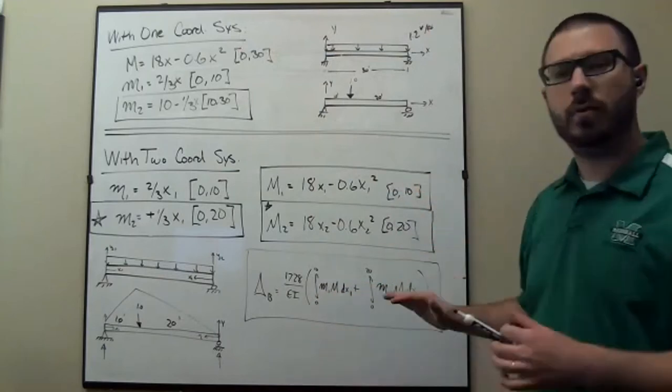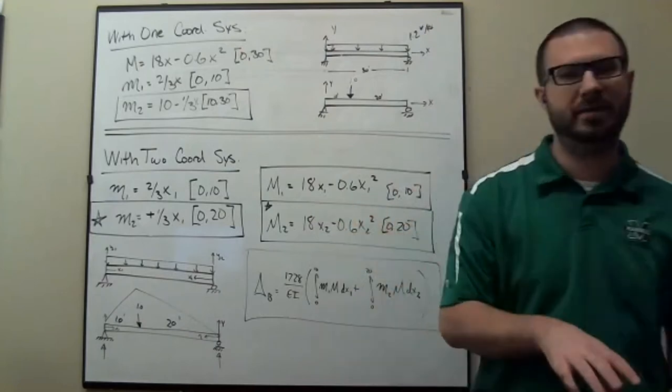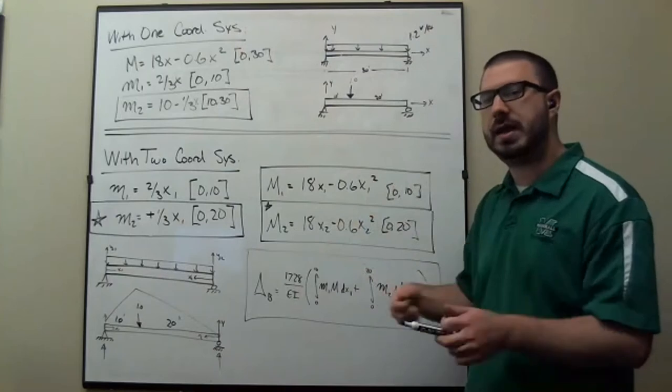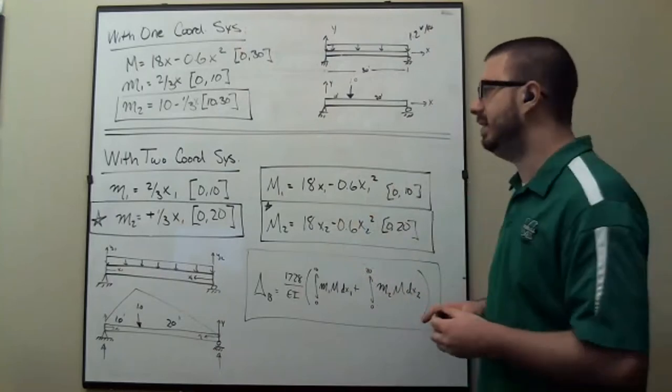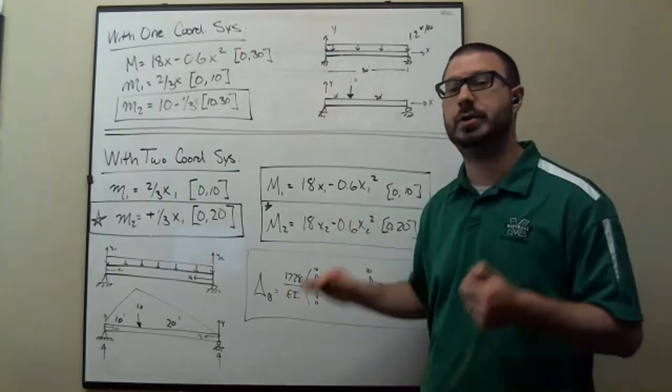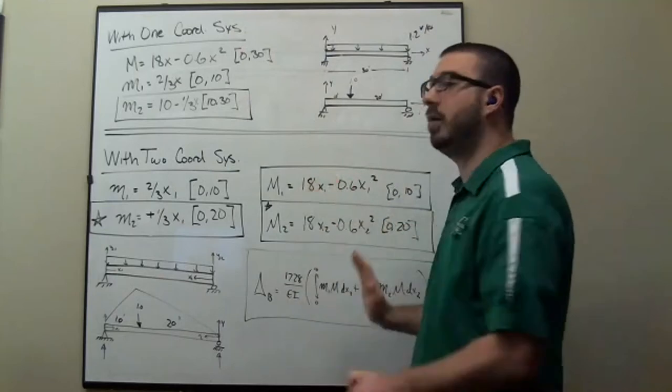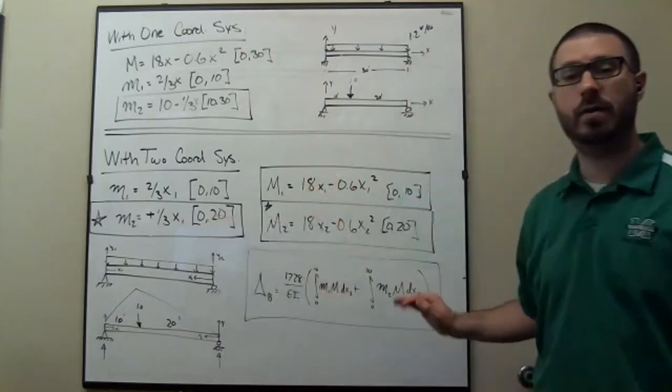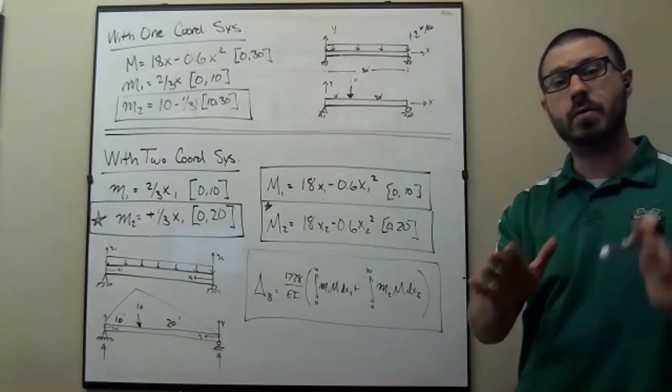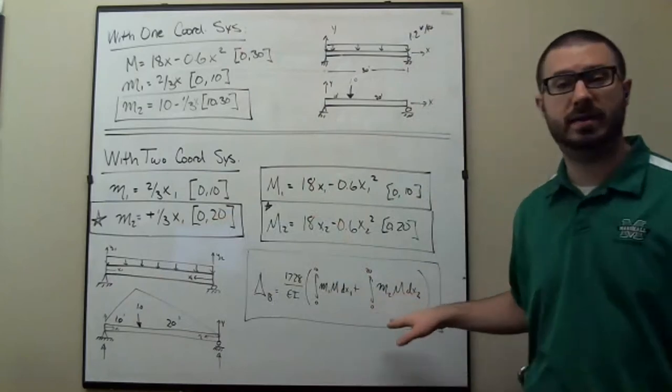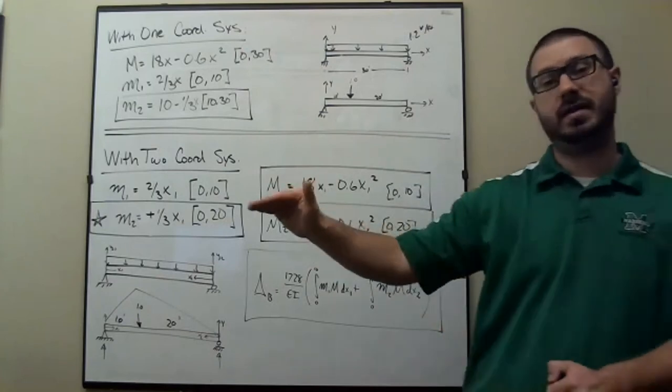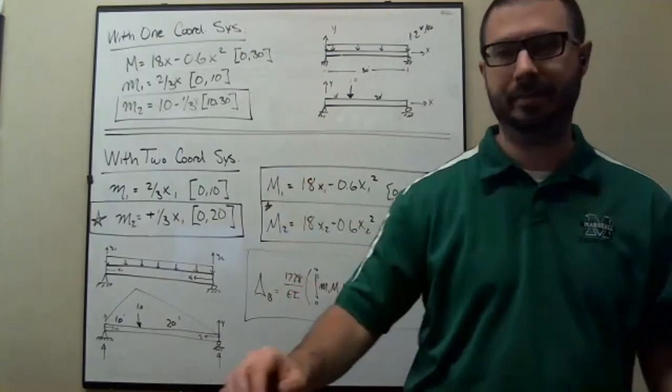So the two coordinate systems might seem a little complicated the first time that you do it. But the more that you chug out these problems, what you'll find is that by using two coordinate systems, you're actually making the grunt work that you have to do a lot less labor intensive. You're not having to foil and you're using more integrals with a base limit of 0. If that A value can be 0, it makes chugging out the integrals a lot easier to do.